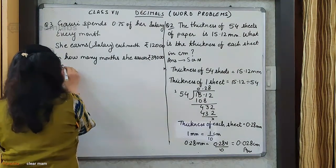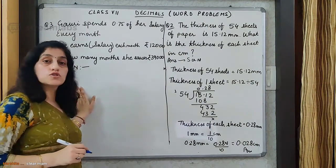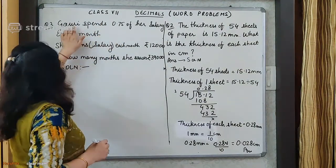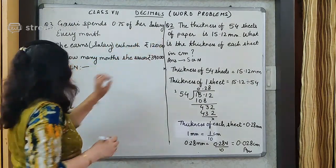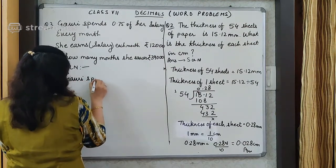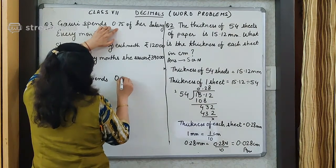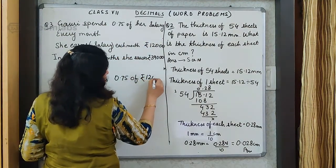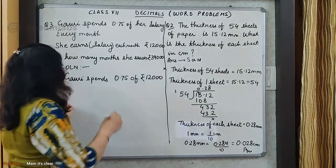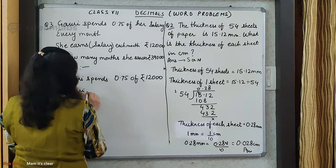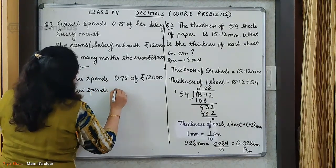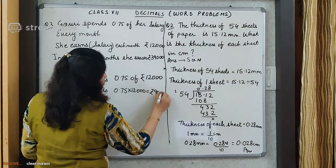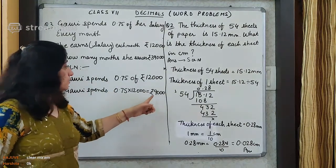So now let's see the solution. Gauri spends 0.75 of her salary, and what is her salary? Rupees 12,000. So first we'll find this much: Gauri spends 0.75 into 12,000. On multiplying, this will come to rupees 9,000. If each month Gauri is spending 9,000, how much is she saving?